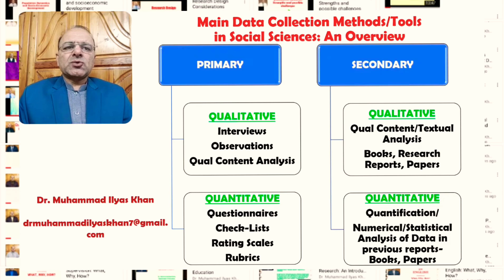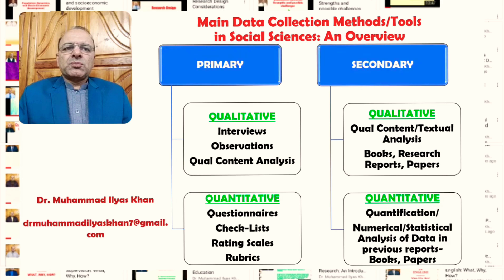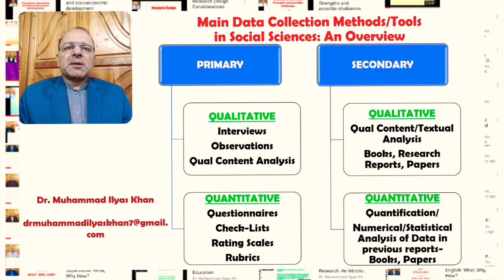In secondary sources, quantitative data may also be based on the quantification or numerical and statistical analysis of data already present in previous research reports, books, or research papers. Secondary data can be in qualitative form — generally textual or pictorial — found in previous books and research papers, but it could also be in quantitative numerical form requiring statistical analysis.